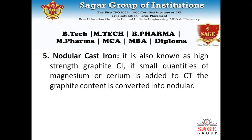Nodular cast iron is a high-strength form of graphite cast iron. Small quantities of magnesium or cerium are used to convert the graphite content into a nodular form.